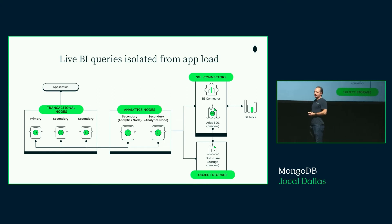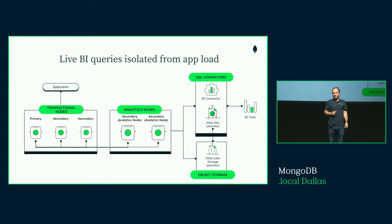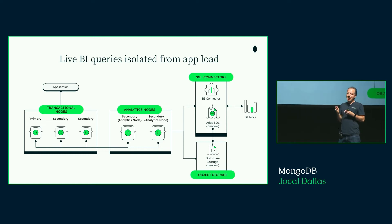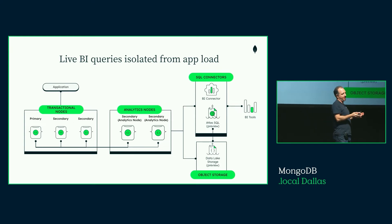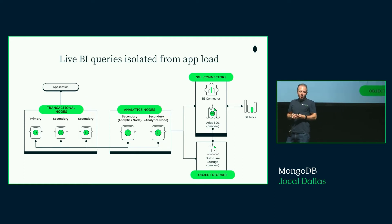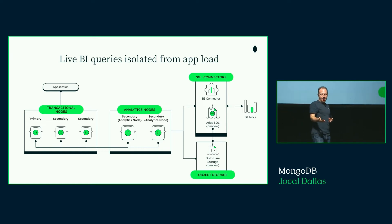It gets interesting when you get into live business intelligence — live because you can do BI literally on your operational cluster. Your application writes to transactional or electable nodes reserved for high availability. But you can also have analytics nodes that you hammer away at, and if you exhaust their resources, they don't affect your high-availability nodes. Earlier this year, we released the ability to scale these analytics nodes up or down independently of your operational nodes.